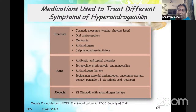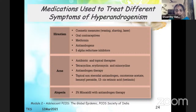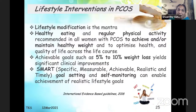For alopecia: two percent minoxidil with antiandrogen therapy. For male pattern baldness, antiandrogen therapy is ideal, but patients must be put on contraceptives too, otherwise if they become pregnant there can be a problem with the male fetus. Lifestyle interventions are the sheet anchor — healthy eating and regular physical activity are important. Achievable goals such as five to ten percent weight loss yield significant clinical improvements.